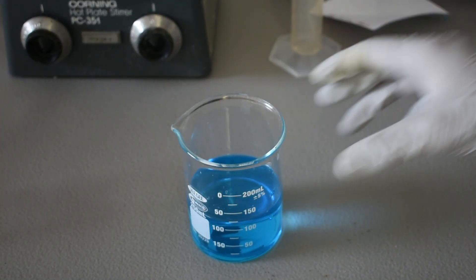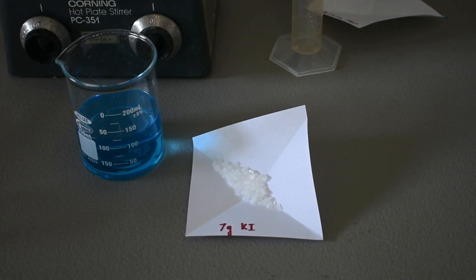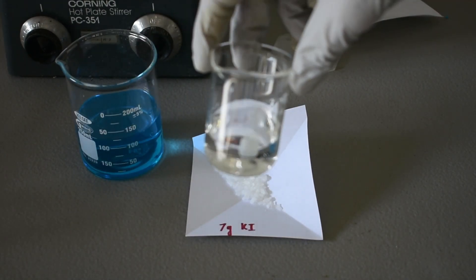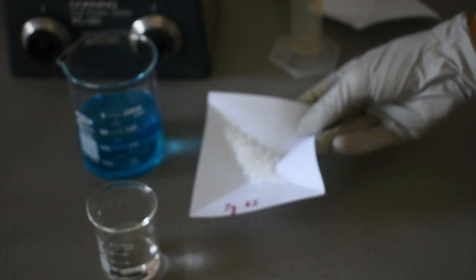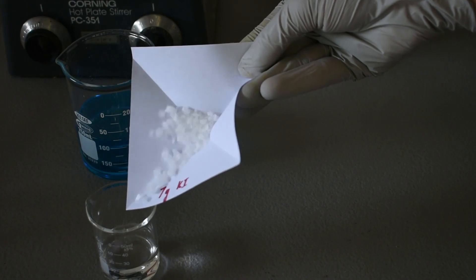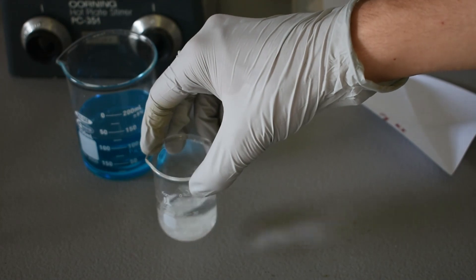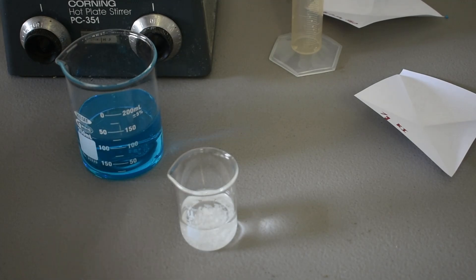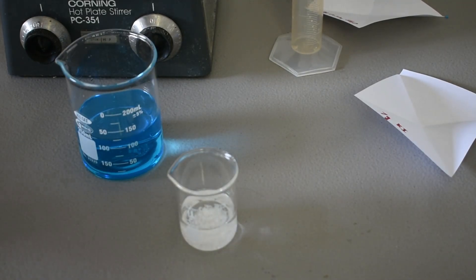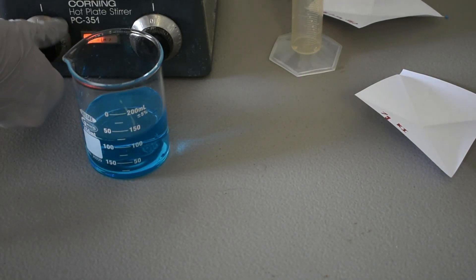And our next step is to dissolve our 7 grams of potassium iodide in 20 milliliters of water. And I have this little baby 50 milliliter beaker here. I'm going to add a little baby stir bar, and then we will proceed after this is dissolved.